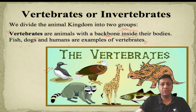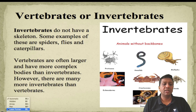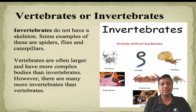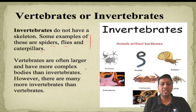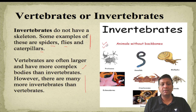Many vertebrate pictures you can see on the screen. Invertebrates are those that do not have a skeleton — examples include spiders, flies, and caterpillars. Vertebrates are often larger and have more complex bodies than invertebrates. The number of invertebrates is much higher in the world in comparison to vertebrates.